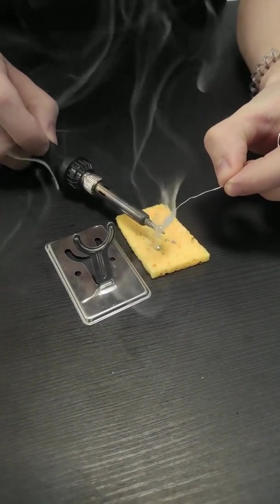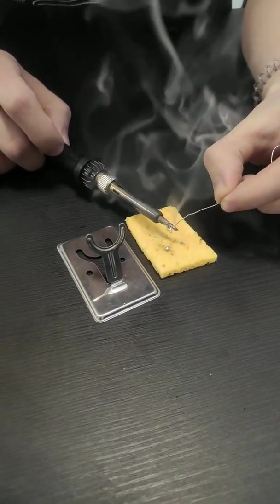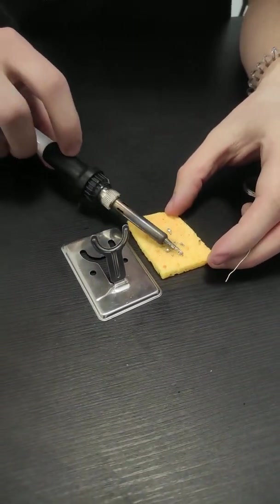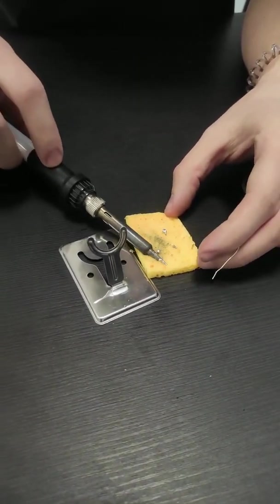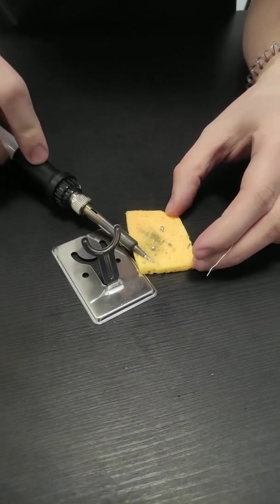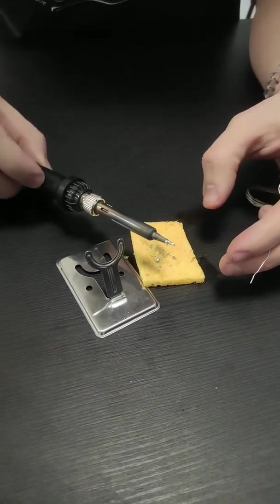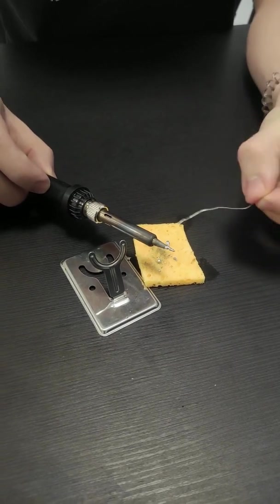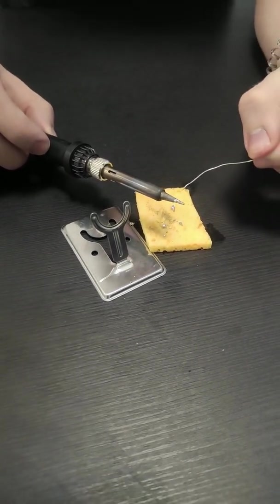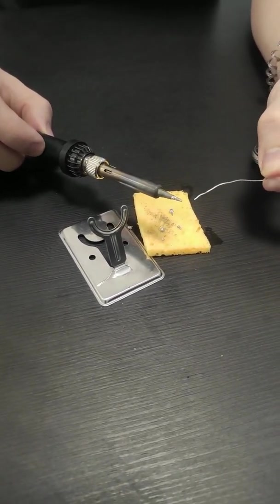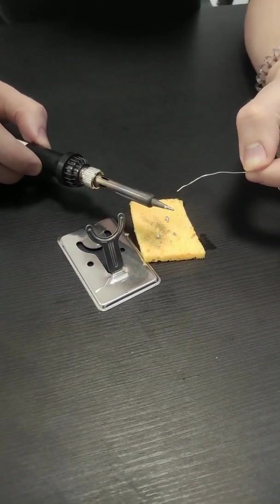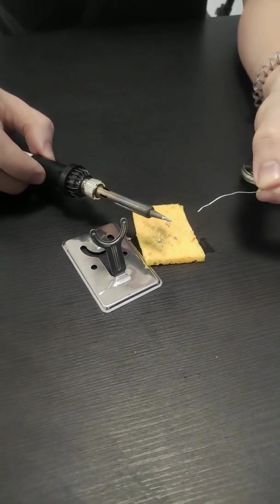After that, you can just apply new solder like this to the tip, then gently rub it off at your sponge. This way, you will make the tip shiny and brand new looking again. This is going to make your soldering experience much better and your life much easier.